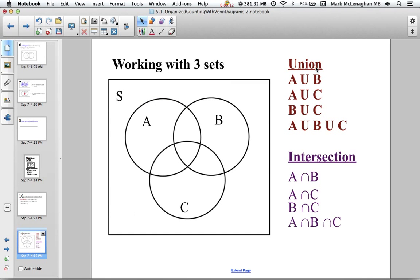Working with three sets, we can also look at various unions. The union of A and B is all the elements in A and B. Union of A and C is all the elements in A and C. Union of B and C is all the elements in B and C. The intersections: A and B is just this part here, A and C is just this part here, B and C is just that part there. And finally, the intersection of A, B, and C is just the middle part.